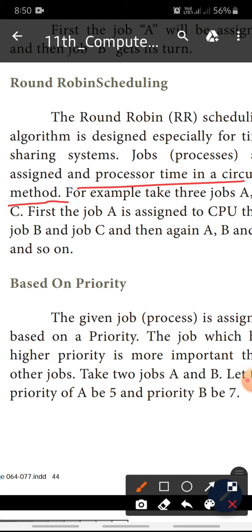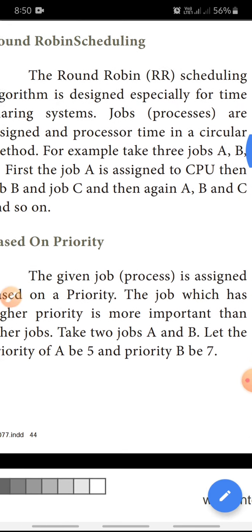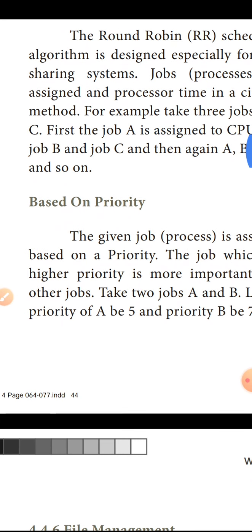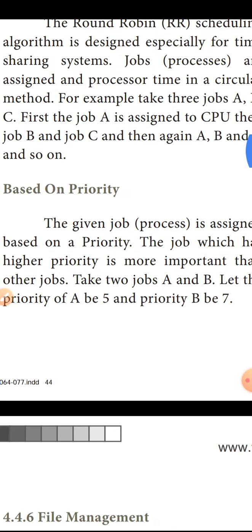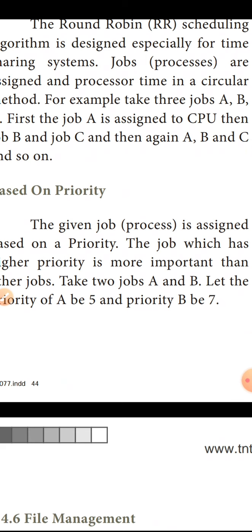In the circular method, this means Round Robin scheduling. For example, take three jobs A, B, and C. First, job A is assigned to the CPU, then job B and C, then again A, B, and C, and so on.